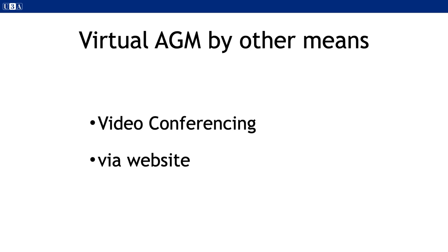Hosting your EGM on video conferencing platforms such as Zoom or Microsoft Teams may not be a good idea if several of your members do not have the knowledge, or the inclination, or the technology to take part. Whilst you will almost certainly have a clause in your constitution that says omissions to give notice to any member shall not invalidate the proceedings, the omission must have been accidental and not by design.